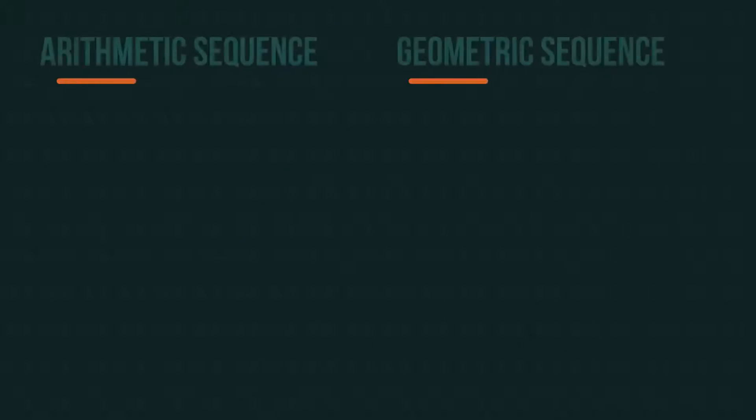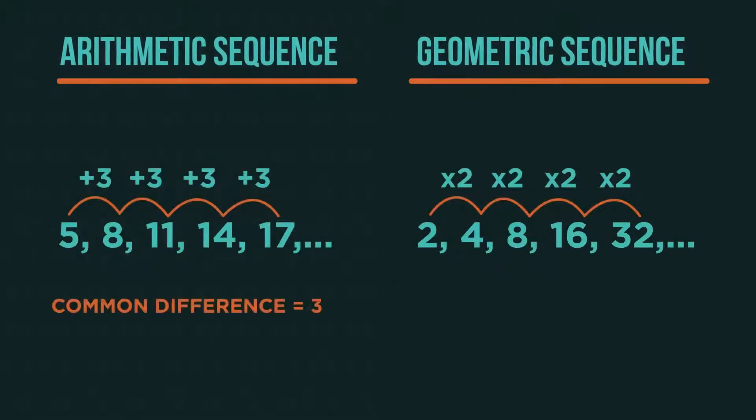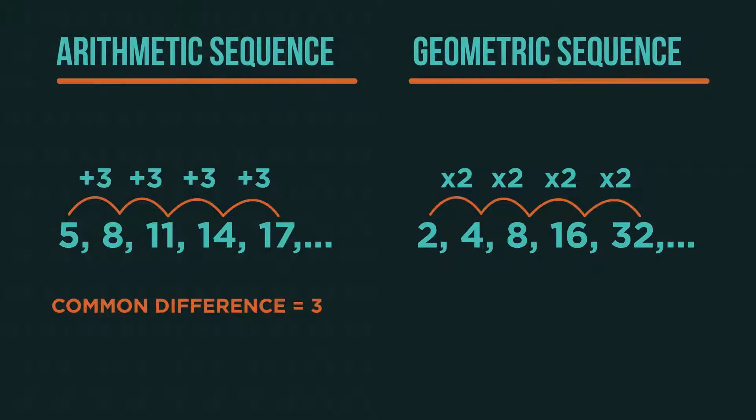So in arithmetic or linear sequences, it's called a common difference. But in geometric sequences, it's called a common ratio.